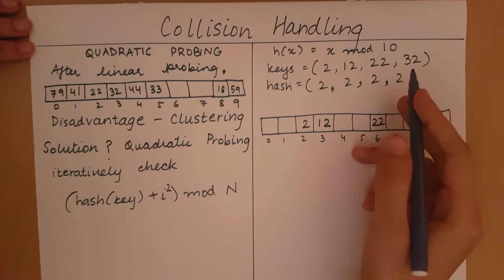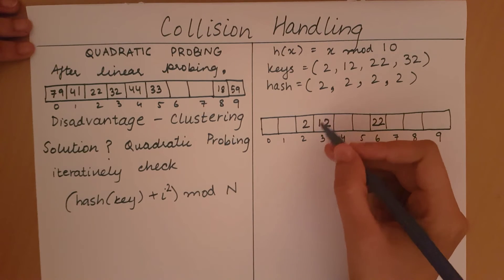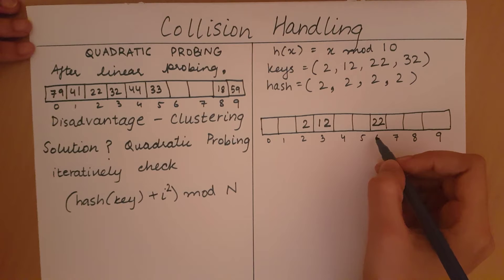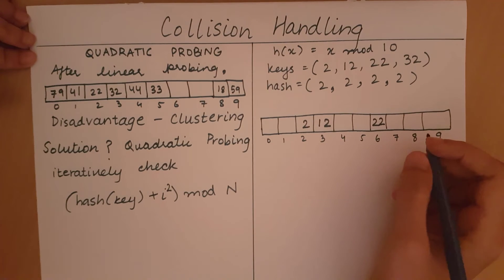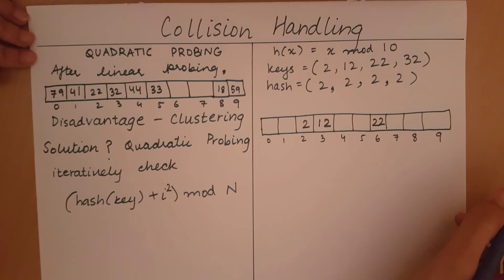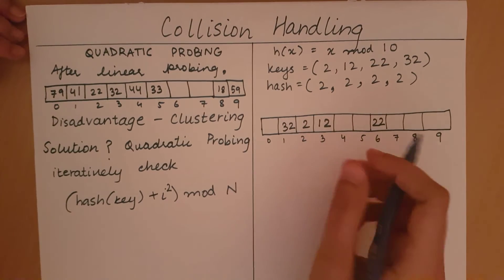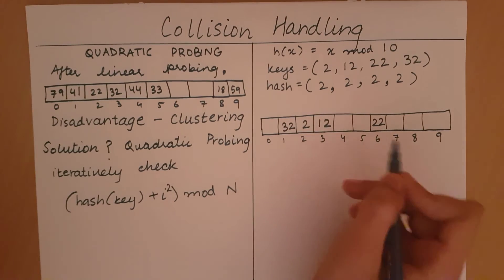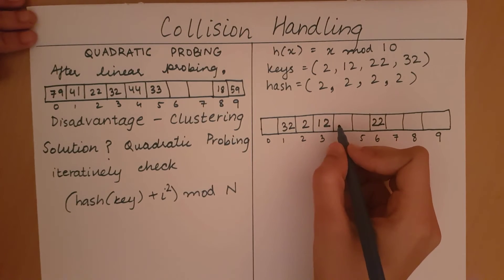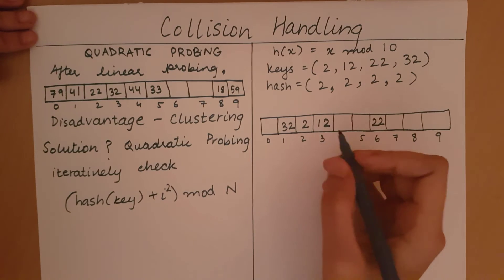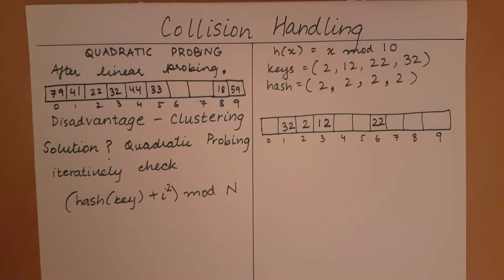Now I will place 32; its hash value is 2. Index 2 is not empty, so I check 2 + 1² = 3, which is not empty. I check 2 + 2² = 6, which is not empty. So I check 2 + 3² mod 10 = 2 + 9 mod 10 = 11 mod 10 = 1, and so 32 is placed at index 1. As you can see, there is no clustering in consecutive elements. Using quadratic probing we can counteract the clustering problem.